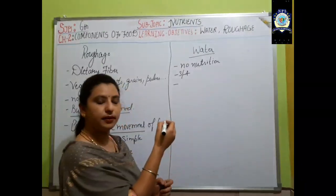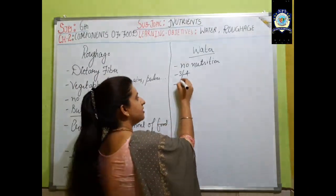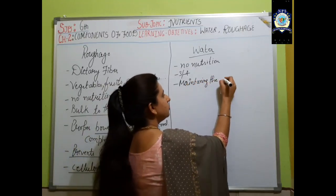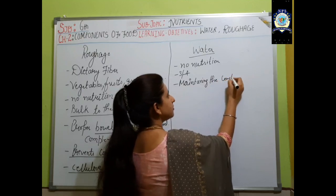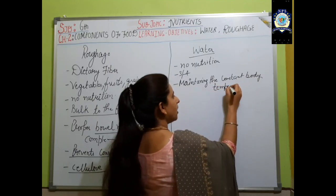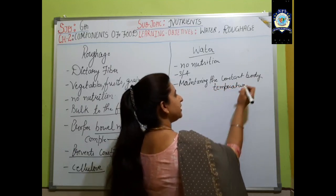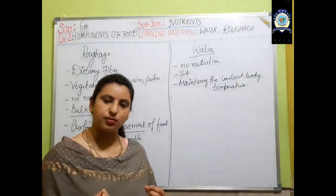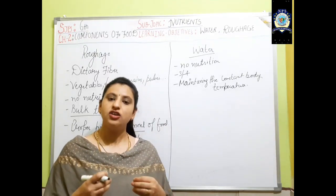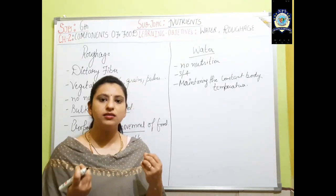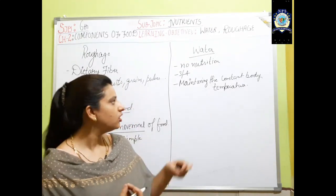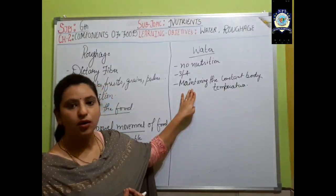Water helps in maintaining a constant body temperature. When we feel very hot during summers, we sweat to cool our body. Sweat contains water and toxic salts present in the body, which leads to coolness of the body. So water helps in maintaining body temperature.